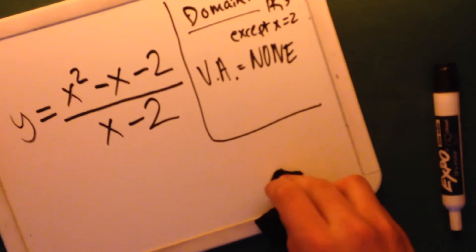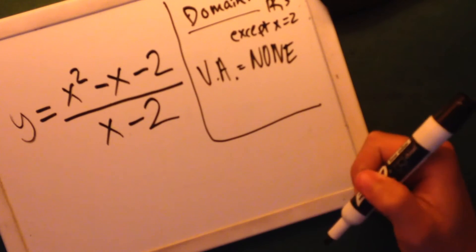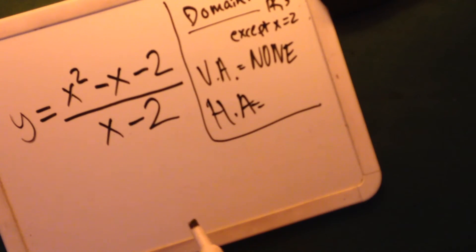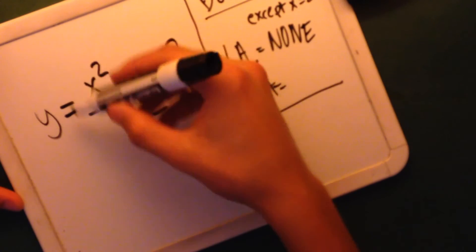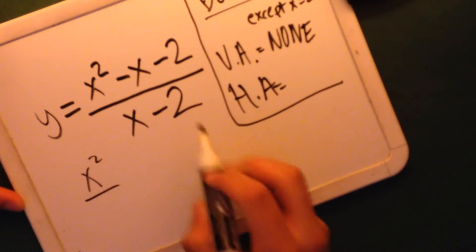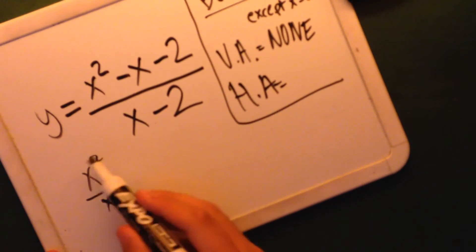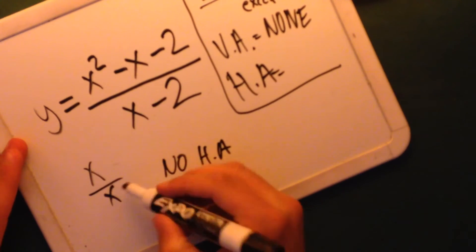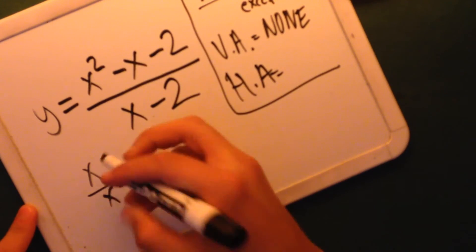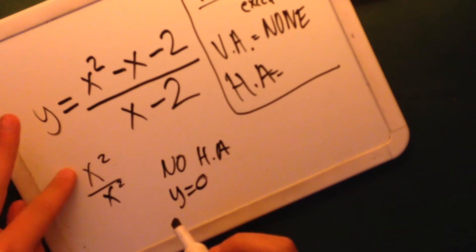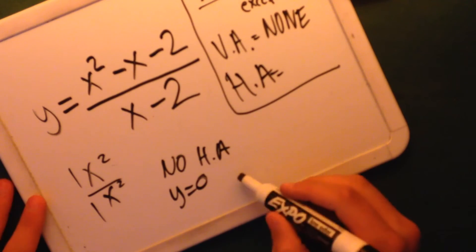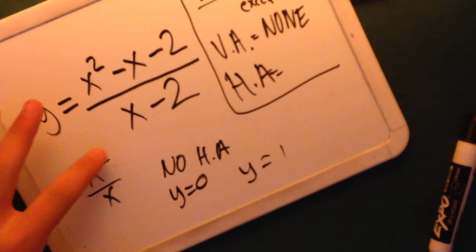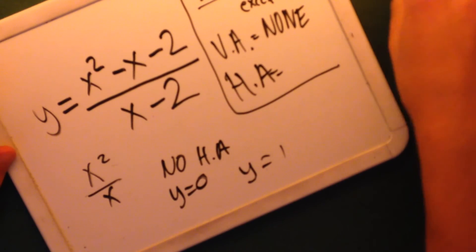Now that we've found the point of discontinuity, domain, and vertical asymptote — in this case we had none — we're going to work on the horizontal asymptote. For the horizontal asymptote, we find the greatest exponent on top, which is x squared, over the greatest exponent on the bottom, which is x. Since the exponent on top is greater than the exponent on the bottom, there is no horizontal asymptote. If the bottom were greater, it would be y equals 0. If they were equal — say x squared over x squared — you divide the coefficients, so it would be y equals 1. But here, x squared on top is greater, so there is no horizontal asymptote and no vertical asymptote.